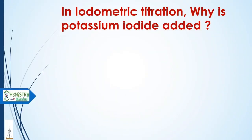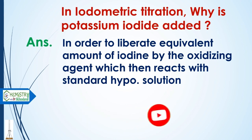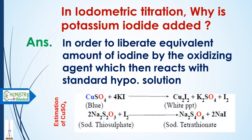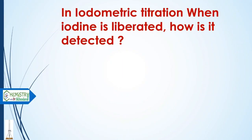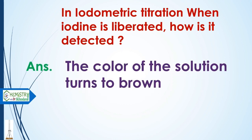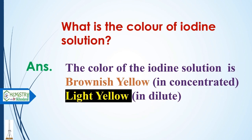In iodometric titrations, why is potassium iodide added? The answer is: to liberate an equivalent amount of iodine from the oxidizing agent, which then reacts with the standard hypo solution. When iodine is liberated, how is it detected? The color of the solution turns brown. What is the color of iodine solution? In concentrated solution it is brownish-yellow, and in dilute solution it is light yellow.